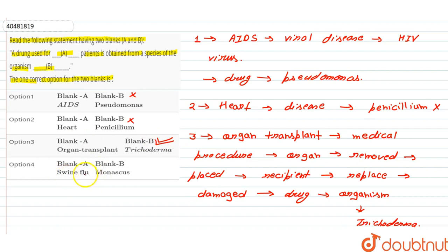If we talk about swine flu, we have given monascus, this is also an incorrect match. Swine flu is also a viral flu and the drug is not obtained from monascus. So what is the correct answer for this question? Option 3.